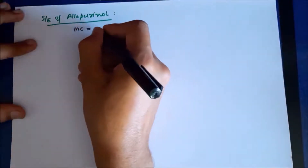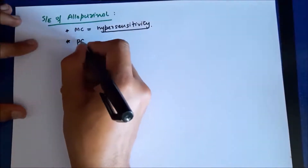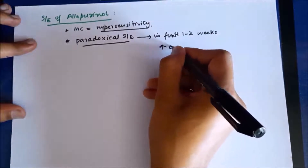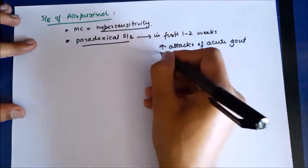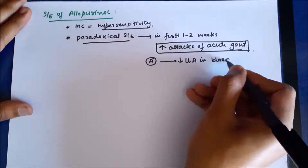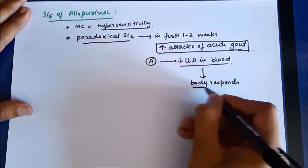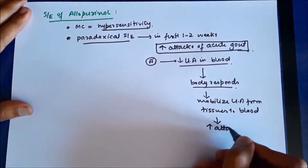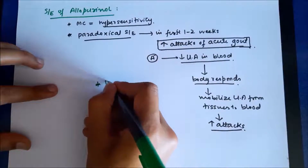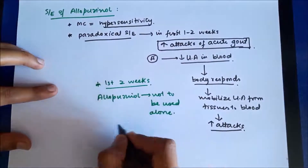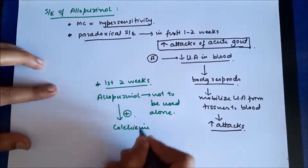The most common side effect of allopurinol is hypersensitivity reactions. An important paradoxical side effect is that it causes increased attacks of acute gout in the first two weeks. This occurs because allopurinol decreases uric acid levels in blood, and the body responds by mobilizing uric acid from tissues to the blood, precipitating acute gout attacks. Therefore, for the first two weeks, allopurinol should not be used alone — it should always be used with drugs such as colchicine or NSAIDs.